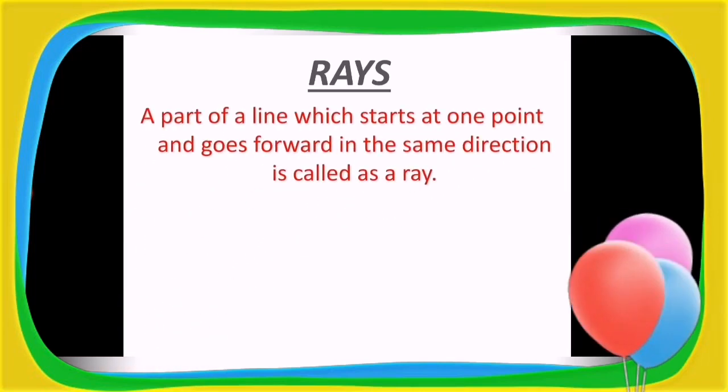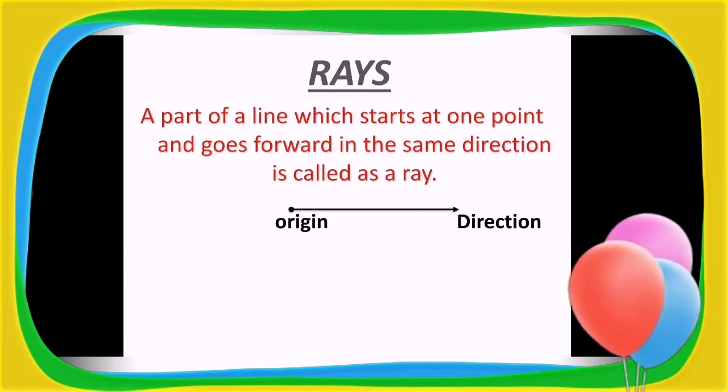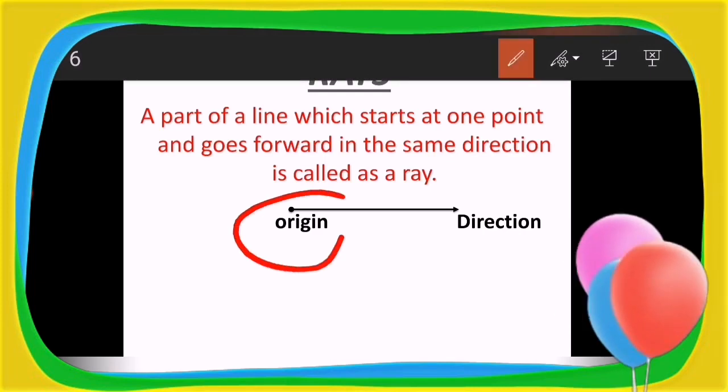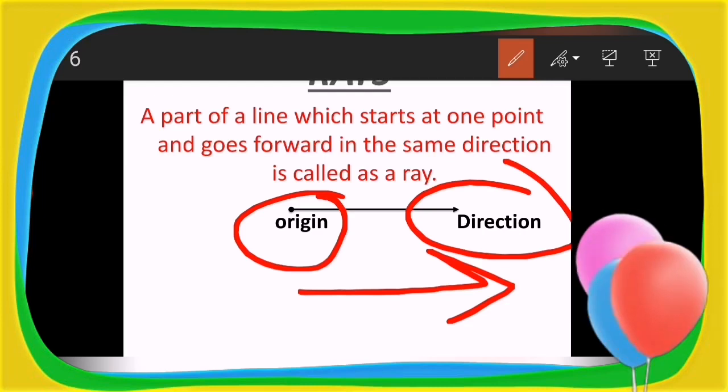A part of a line which starts at one point and goes forward in the same direction is called as a ray. The way I told you, this ray at one section has a point and that point is called as an origin, and it continuously moves in the same direction. That direction is shown usually by the arrowhead. And while naming the ray, we always write its name from the beginning with its origin to the direction.